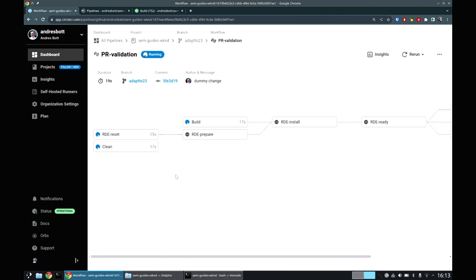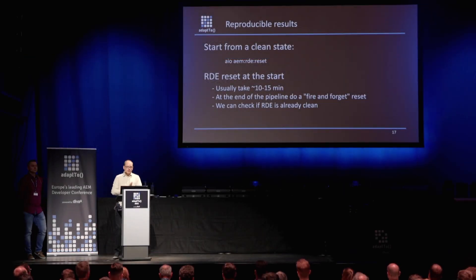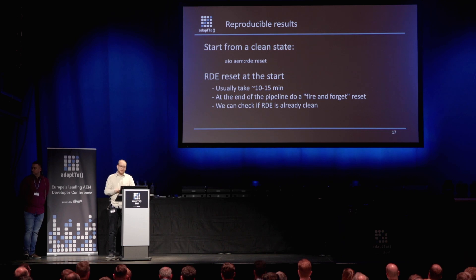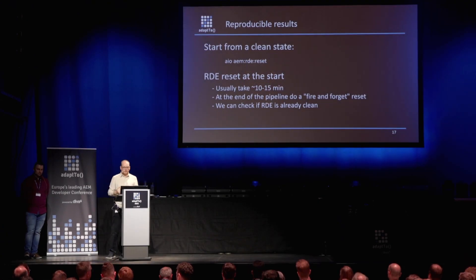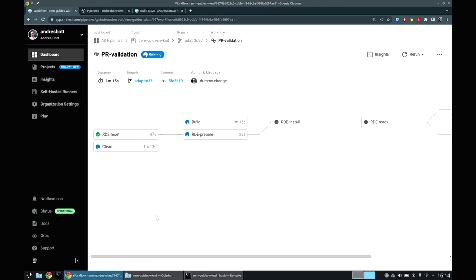So we have a flow where we do a reset at the beginning of the pipeline. To create reproducible results and avoid leftover content or components installed on the RDE, I opted for resetting and starting from a clean slate on every execution — this usually takes around 10 to 15 minutes. I opted to do a fire-and-forget at the end of the pipeline execution. That way we check at the beginning of the next pipeline if it's on a clean slate and skip the reset if so, or still do the reset if not. Here we see it was only 47 seconds — it just checked that it was already in a clean slate so we can move on.